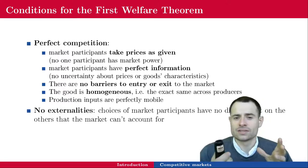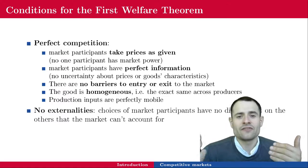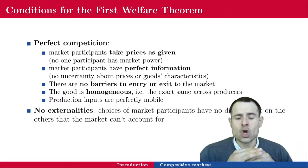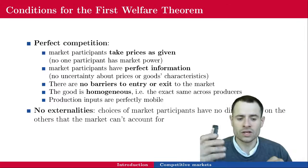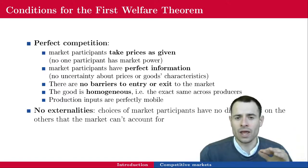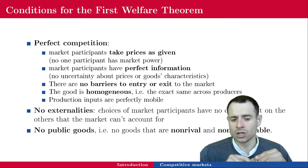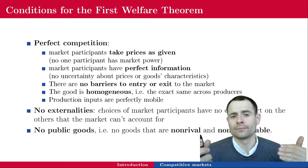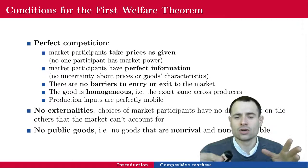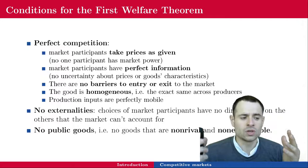Externalities are choices of market participants that have an effect on bystanders — agents who did not take part in the transaction. We need no externalities, meaning choices of market participants have no direct effect on others that the market cannot account for. If there is an effect on somebody else, at least the market is making them pay or compensating them. Finally, there should be no public goods: goods which are non-rival and non-excludable. Non-rivalry means adding one more consumer does not reduce the availability of the good to others. Non-excludability means it is not possible to exclude somebody from consuming the good.